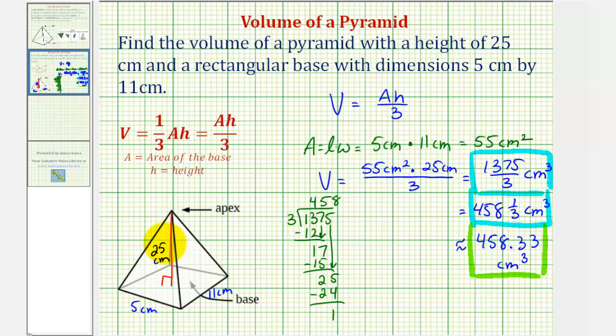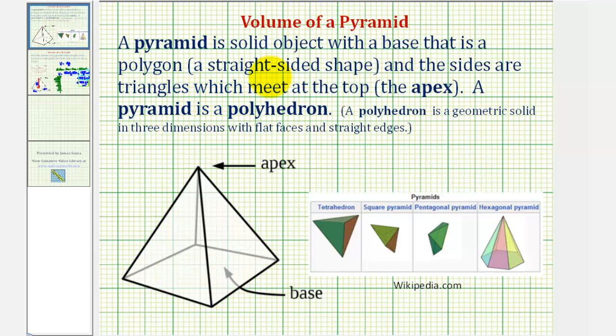Before we go, let's talk more about pyramids. A pyramid is a solid object with a base that is a polygon, meaning a straight-sided shape, and the sides are triangles which meet at the top, called the apex. In this diagram, the base is either a rectangle or square, the sides are triangles—in this case four triangles—and they meet at the apex.